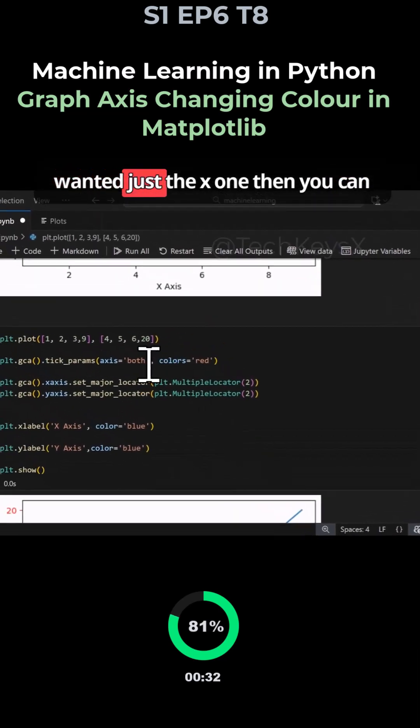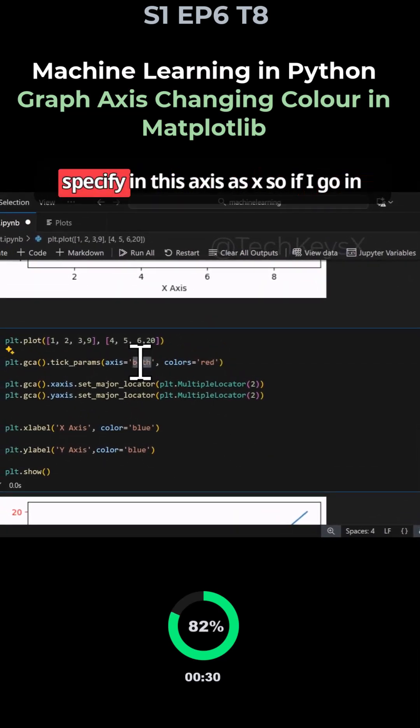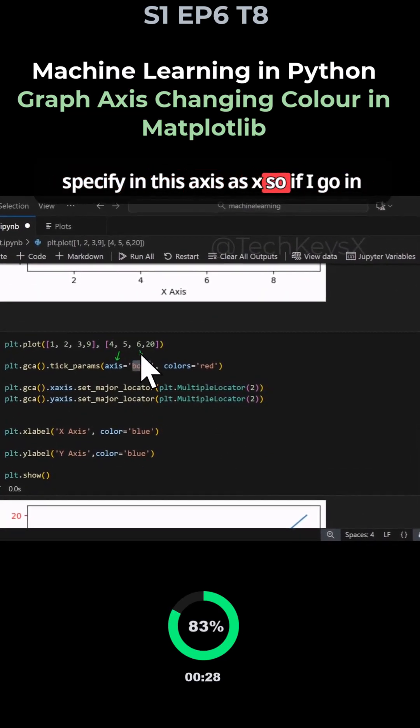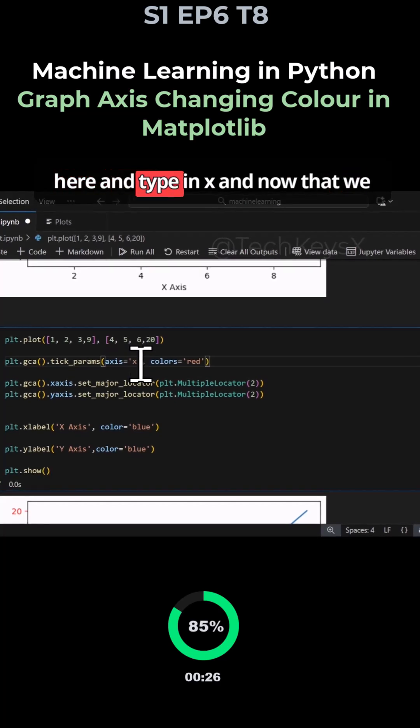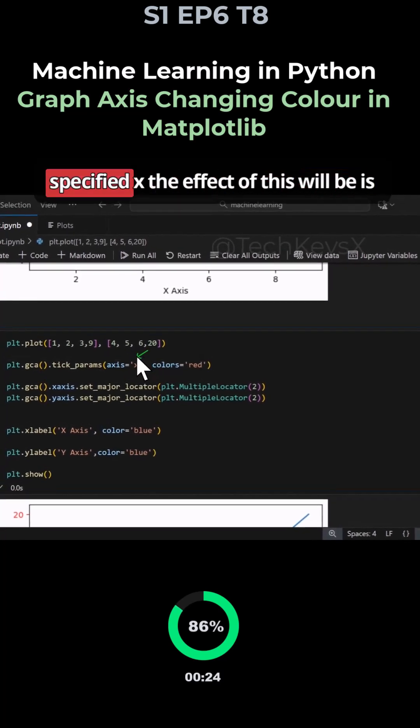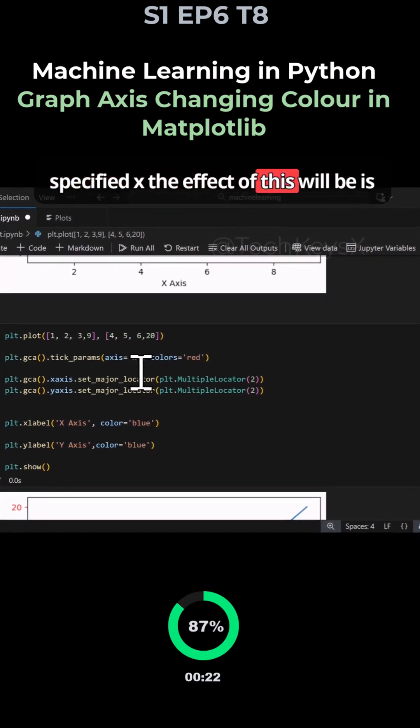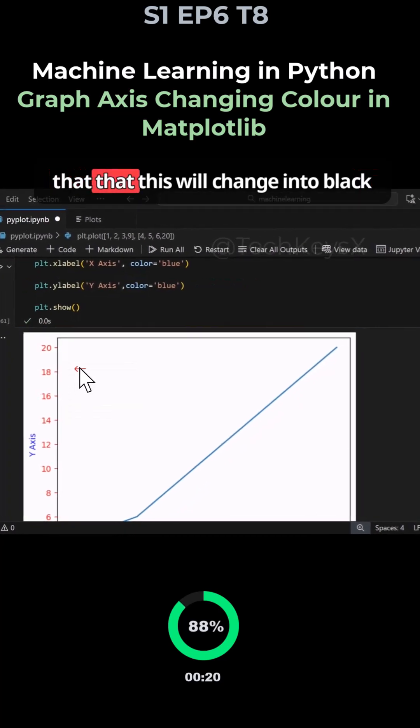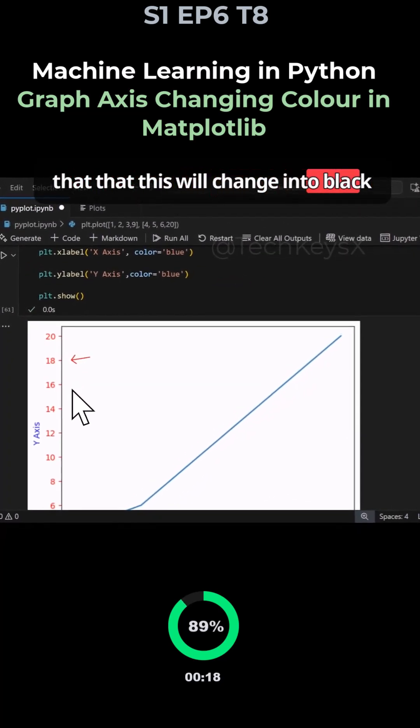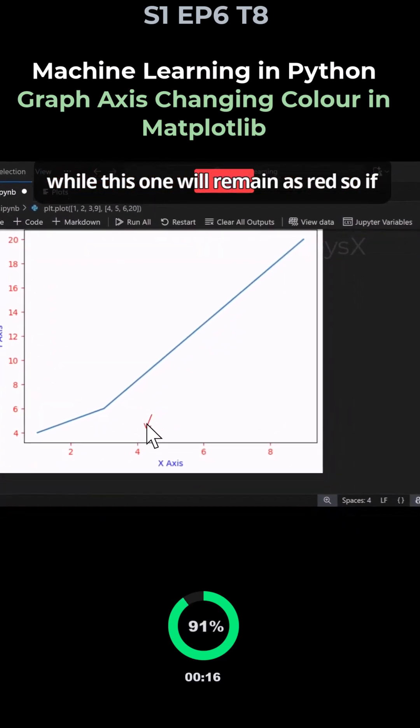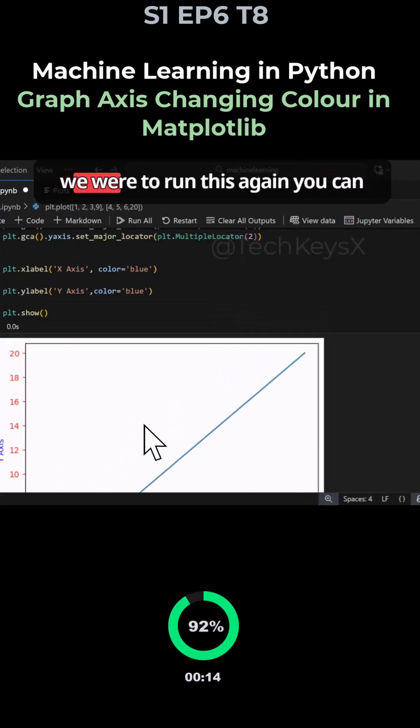If you wanted just the x one, you can specify in this axis as x. So if I go in here and type in x, now that we specified x the effect of this will be that this will change into black while this one will remain as red. So if we were to run this again you can see that we specified x to change into red but we didn't touch the y-axis.